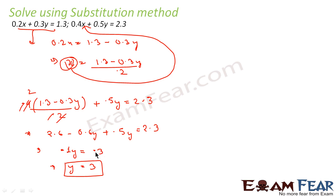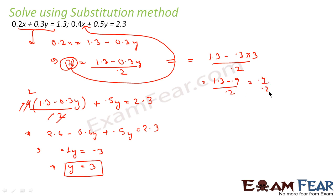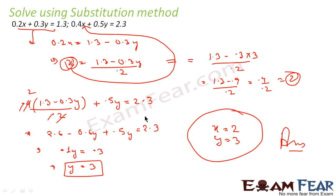Now I substitute y equal to 3 back into the expression for x: x equals (1.3 minus 0.3 times 3) divided by 0.2, which is (1.3 minus 0.9) divided by 0.2, equals 0.4 divided by 0.2, which equals 2. So x equals 2 and y equals 3. In summary: I wrote x in terms of y from the first equation, substituted into the second to get y equal to 3, then found x equal to 2. Practice more — the more you practice, the better it will be.